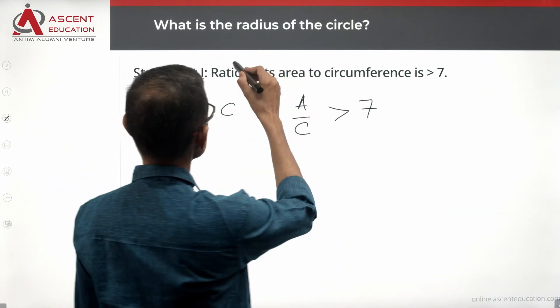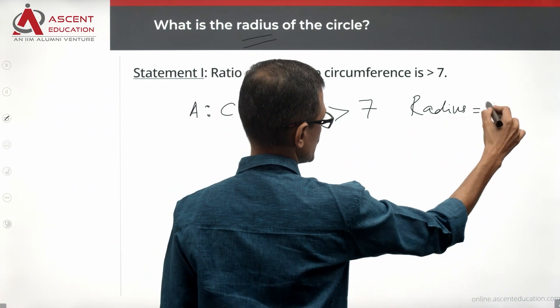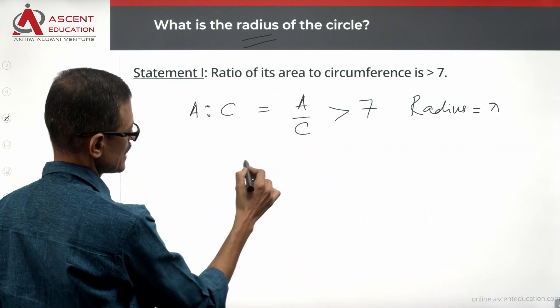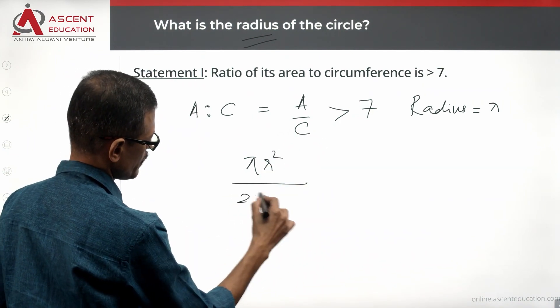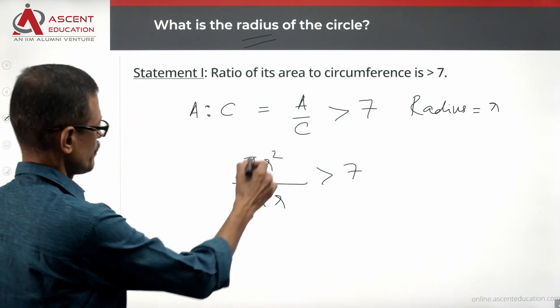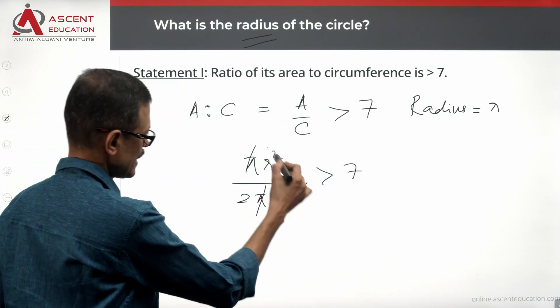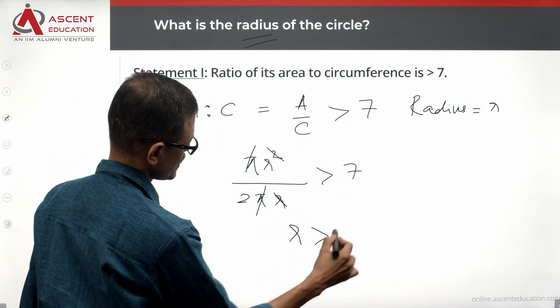Let's take the radius that we will have to find out. We will assign it the variable R. So area of a circle is pi R squared. Circumference is 2 pi R. So pi R squared divided by 2 pi R is greater than 7. Pi gets cancelled with pi. One R gets cancelled with R. We cross multiply, so R is greater than 14.